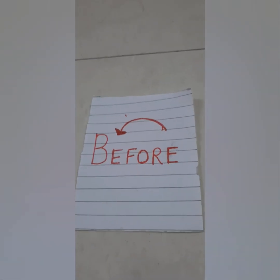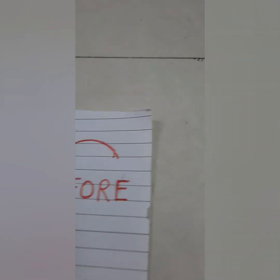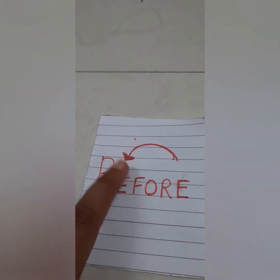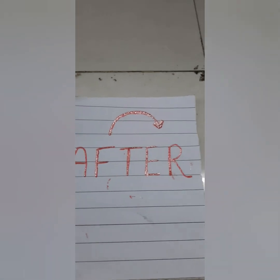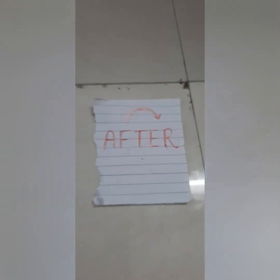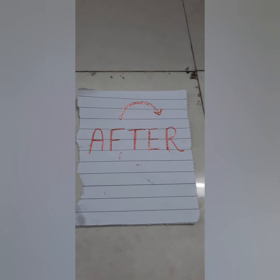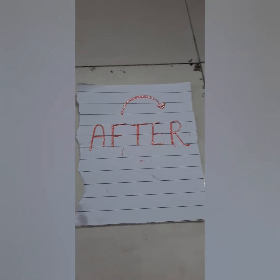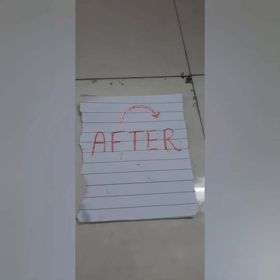So without wasting any time, let's start the video. You can see a lot of objects I have kept here. This is the 'before' label and here on the floor I have made the 'after' section. I have drawn the arrows also — this indicates the before arrow and this is the after arrow — just to give a clear picture to the kids.